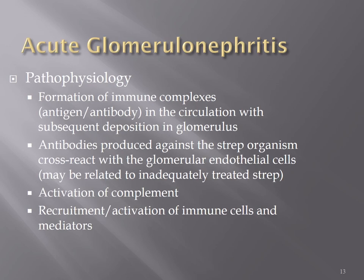Streptococcal infection may lead to the formation of immune complexes — combinations of antigen and antibody — that circulate in the blood and eventually deposit in the glomerulus. Antibodies are produced against the streptococcal organism, but glomerular endothelial cells cross-react with the antibody, triggering complement activation and recruitment of immune cells and mediators, ultimately resulting in acute glomerulonephritis.